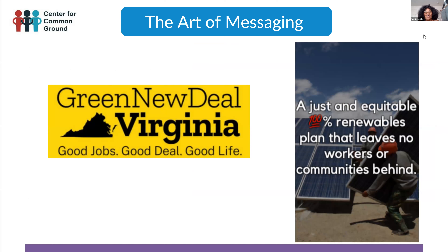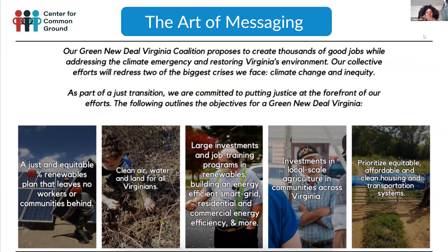I like the Green New Deal Virginia logo: good jobs, good deal, good life. When you put words and images together, and people see themselves in those images, that builds support across a lot of divides — age, race, and place, urban versus rural. I would work to make some of the people in the images a little more racially diverse, but I love the messaging.